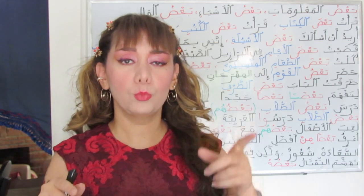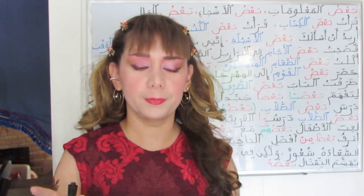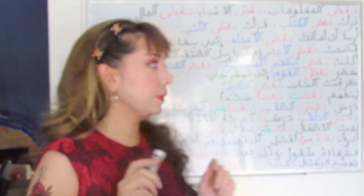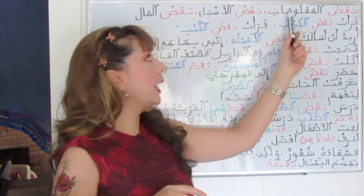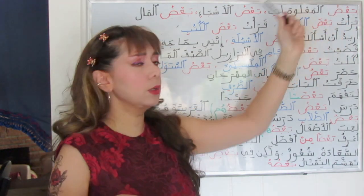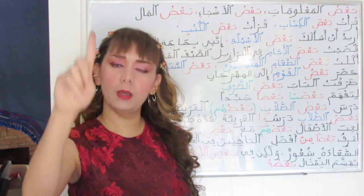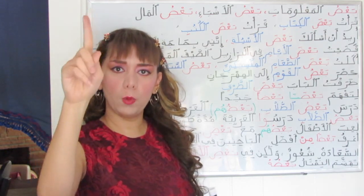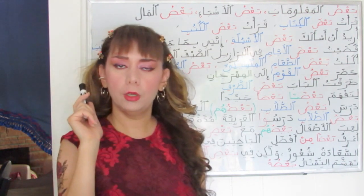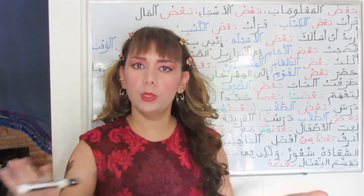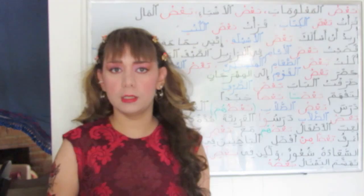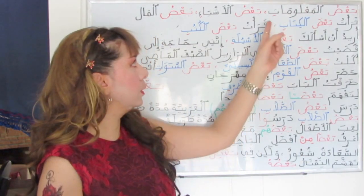So: idafa, mudaf, mudaf ileh. Let's check some examples. Ba'd is 'some information.' Here, ba'd comes with a single damma — one vowel — because it is the first term of the genitive construction. So no nunation, a single damma. Al-ma'lumati is in the genitive case with the sign of kasra.